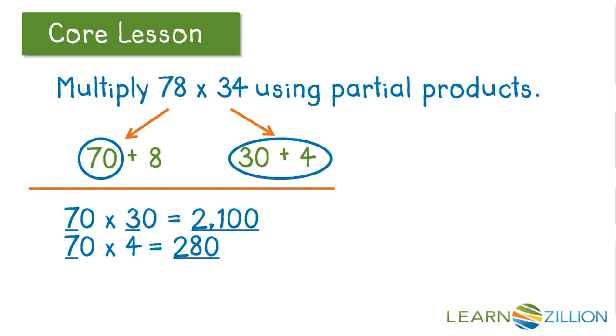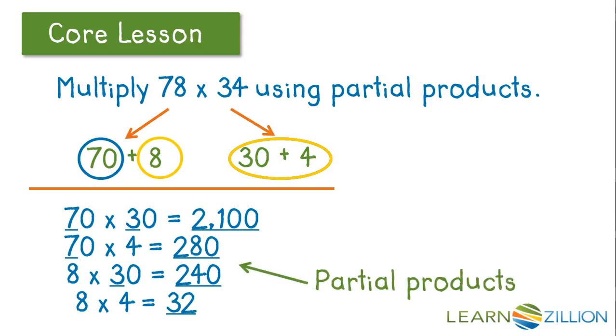Let's move to the next digit which would be 8 and we multiply 8 by the values of 34 which is 30 plus 4. So we have 8 times 30 to get 240 and 8 times 4 to get 32. These are our partial products or part of the final answer or part of the final product.